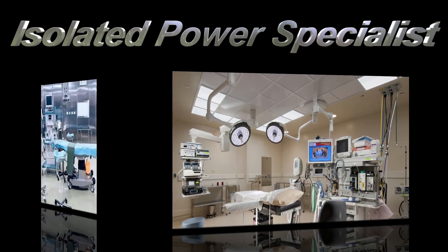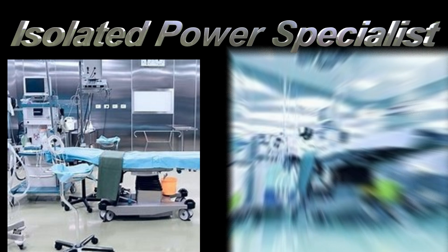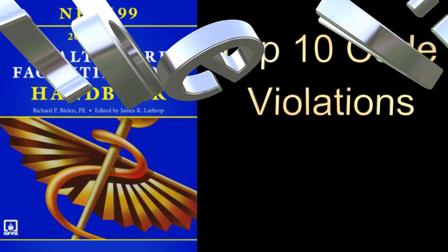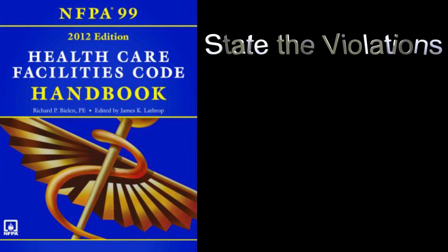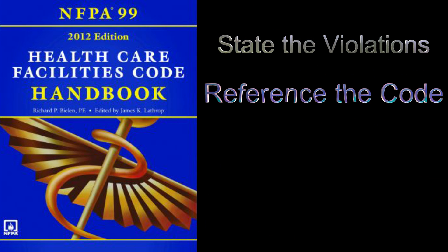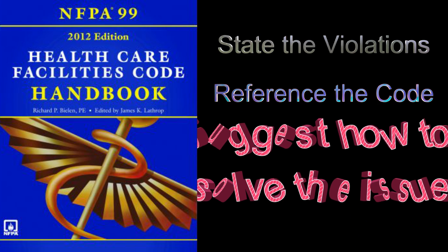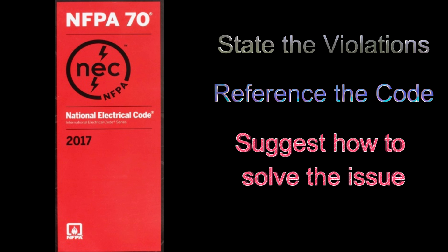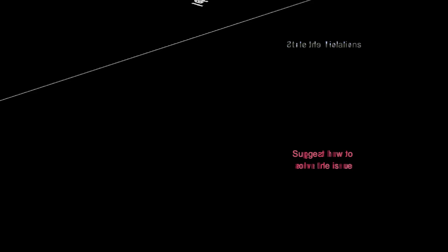Over the years we have performed various services for hospitals and other healthcare facilities. During those years we have observed various NFPA code violations. We feel it would be helpful to publish the top 10 code violations that we frequently see. We'll state the violation, then cite the NFPA code that is in violation, and finally explain how to solve the problem. The code references are to NFPA 99 Healthcare Facilities Code 2012 Edition Electrical Systems and to NFPA 70 National Electric Code 2017 Edition.